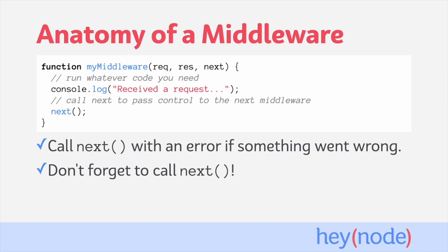Make sure you always call next in your middlewares. If a middleware neither calls next nor ends the request by sending a response, the request will hang and never complete. Without calling next, the request never makes it past that middleware. This is a very common bug when working with Express, so make sure you're calling next to trigger the next middleware.